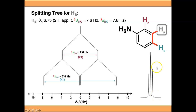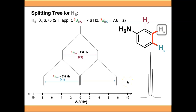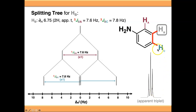Technically speaking, HB should give you a doublet of doublets. But by pure coincidence, or just the situation it's in, the two J values coupling to HA and HC are very, very similar - they could even be identical. So what you end up with is a signal that looks like a triplet. A perfect spectrometer with infinite resolution would be able to tell these two signals apart and you'd say it's clearly a doublet of doublets. But we don't have a perfect spectrometer, so the spectrometer cannot resolve these two signals - you end up with a coalesced signal in the middle which looks like a triplet. This is an apparent triplet: you understand that HB shouldn't technically give you a triplet, but it looks like one. Technically it's a doublet of doublets, but you would report it as an apparent triplet.